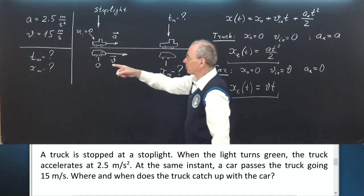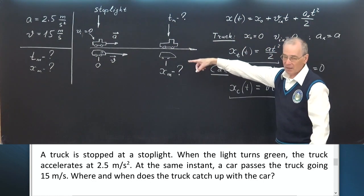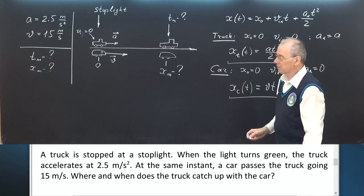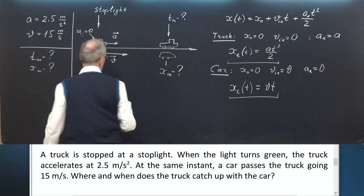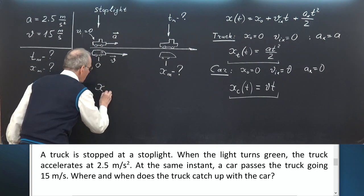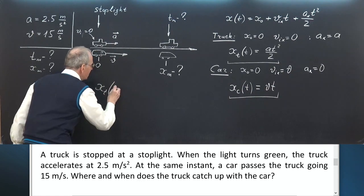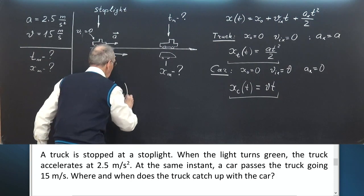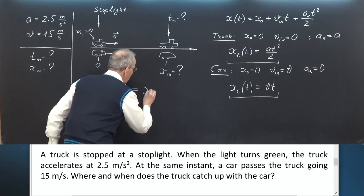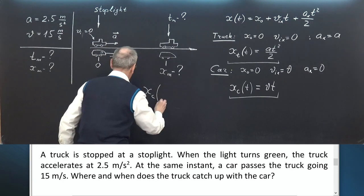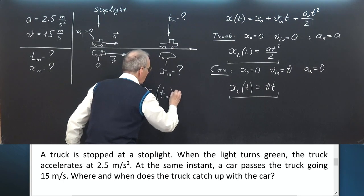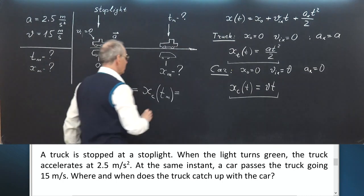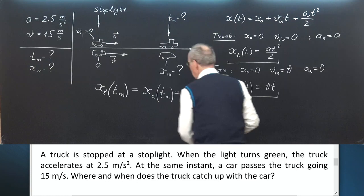At a moment T_m, these two bodies meet. The truck catches up with the car. So the meeting condition: x truck at the moment T_m, meeting time, equals x car at the same moment T_m. And these coordinates are x_m, meeting condition.